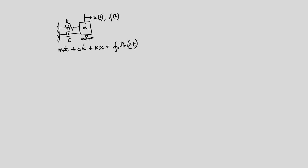We have a linear system excited by a harmonic force with frequency λ, and we also have initial conditions at t equal to 0 — displacement and velocity defined at t equal to 0, that is x₀ and x₀-dot.